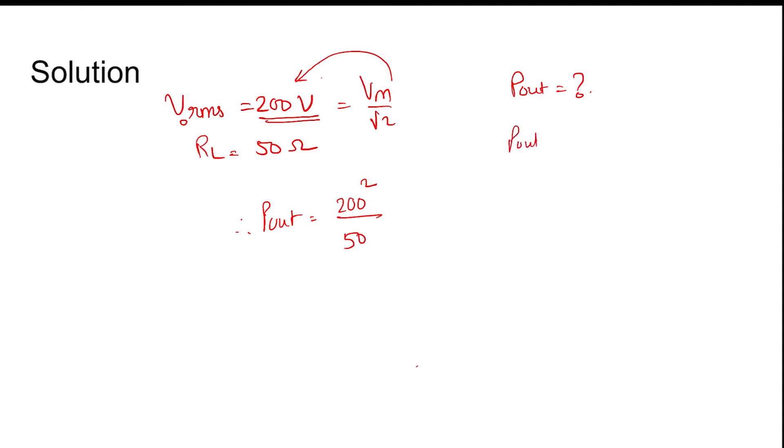Actually, this can also be determined as P_out equals V_m squared by 2RL. So V_m is 200 times root 2, that is the peak value, whole squared divided by 2RL. This comes out the same because root 2 squared by 2 cancels out.